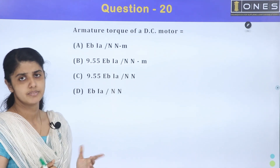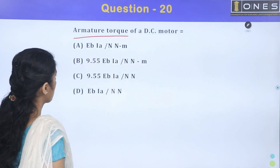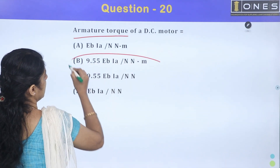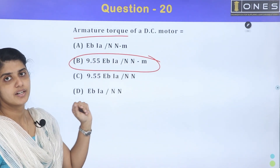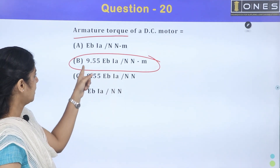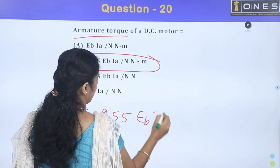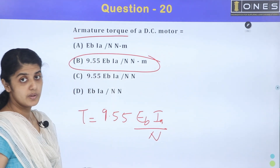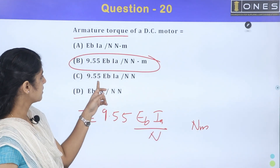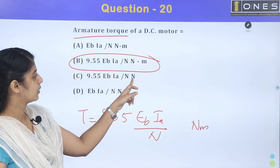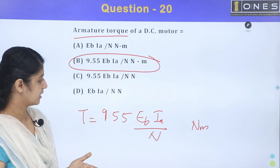Next question: The armature torque of a DC motor. The torque formula is T = 9.55 × Eb × Ia / N, where N is the speed. Two options have the same equation but different units. The correct unit for torque is Newton-meter, so the correct option is the one with Newton-meter units.